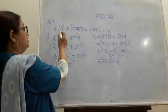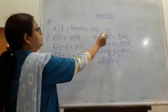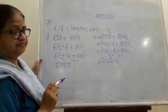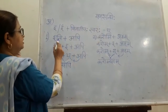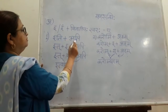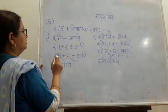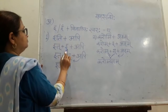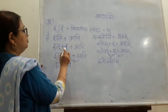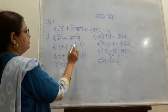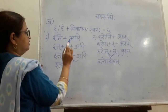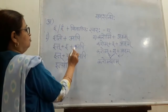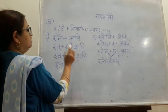then this i will be replaced by y halanta. Here the example is iti plus api. Iti is ending in rasva i. In front of that we have api, so i is followed by a.